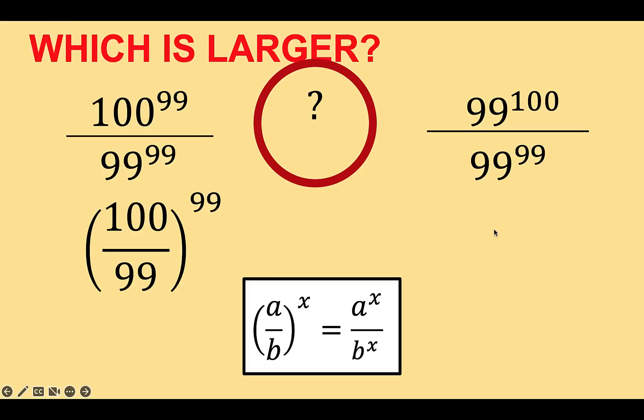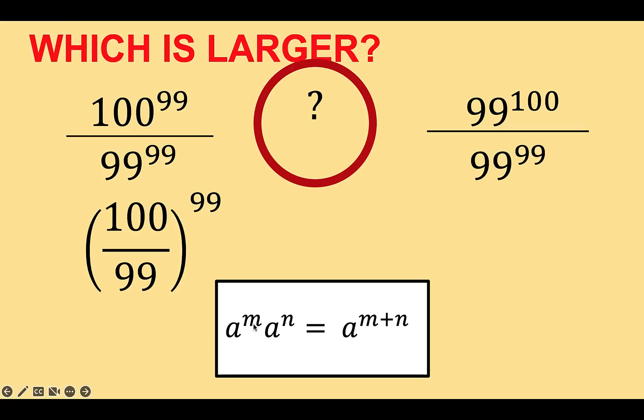Then at the right side, let's recall also another property of exponent. When you have a raised to m times a raised to n, that is equal to the common base raised to the sum of the exponents.